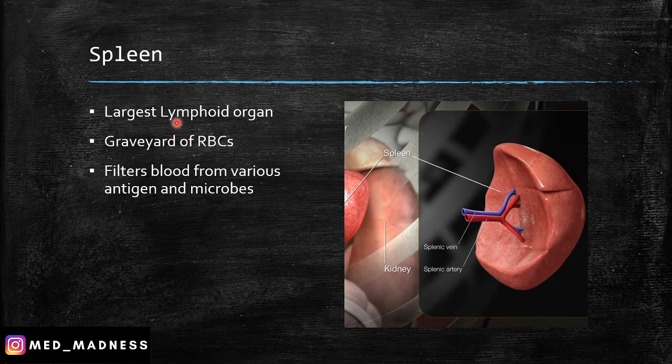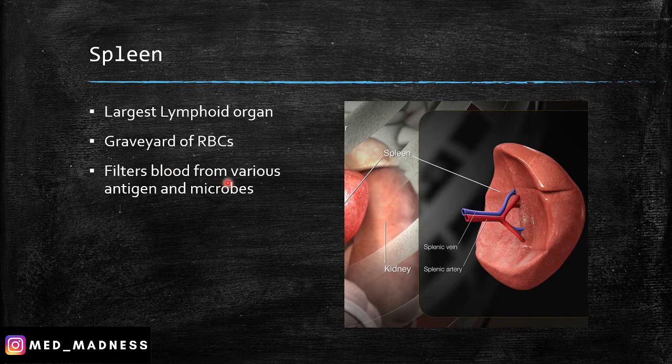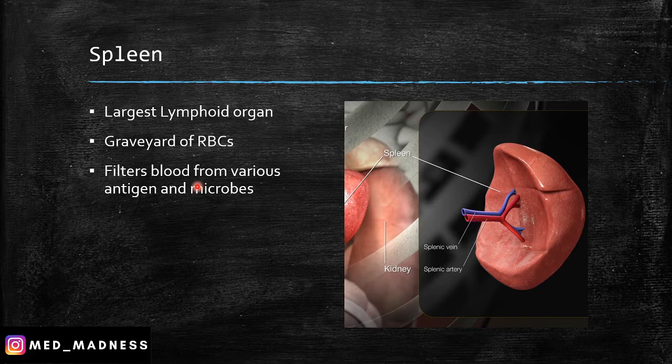The spleen is the largest lymphoid organ. It serves two important functions. One is, it acts as a graveyard of RBCs — it is going to destroy the old RBCs in the blood. Also, it is going to filter the blood from various antigens and microbes. Note that this is the only lymphoid organ where the blood comes in direct contact with the immune cells.